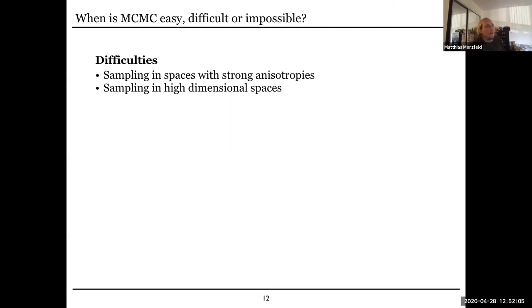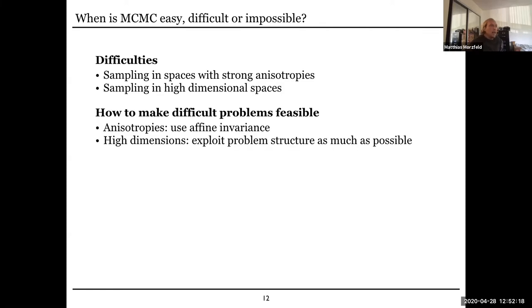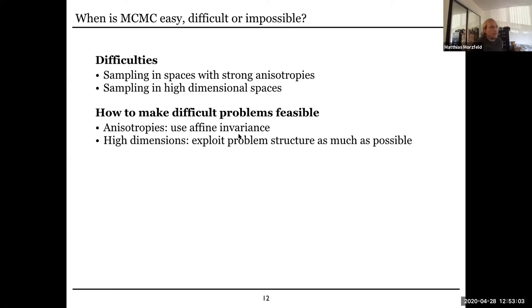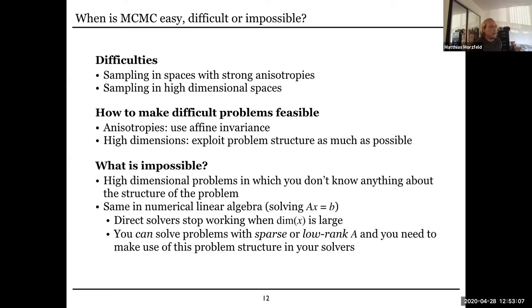I'm going to focus on two difficulties. One is sampling in spaces with strong anisotropies; the other is sampling in very high-dimensional spaces, and the approaches to tackle these are very different. In high dimensions, I'm quite convinced you need to exploit as much of the problem structure as possible — similar to linear algebra: if you solve Ax = b and the dimension of x is very large, you cannot use a direct solver; you need either a sparse solver or hope that your matrix is of low rank. There are analogies in sampling as well. For anisotropies, you can make use of affine invariance, which reduces the effect these anisotropies have. It gets very difficult when you have a very high-dimensional problem and don't know anything about what the problem looks like — the same situation as in linear algebra where you cannot solve Ax = b unless you make assumptions about the structure of A.